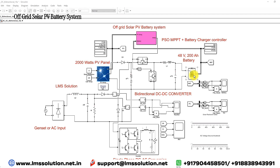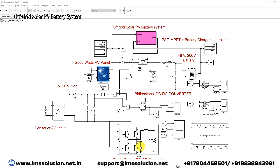When the solar PV power goes to zero, the battery will supply power to the AC load via the single-phase DC-AC conversion.